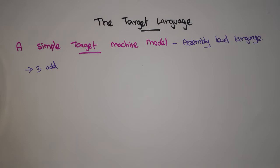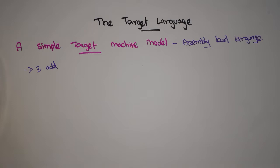We should know about the target language before designing a compiler. Here we are going to discuss a simple target machine model. We'll consider assembly-level language as the target, since it is hard to design a machine-level language directly. All the instructions we consider are of three-address code format.